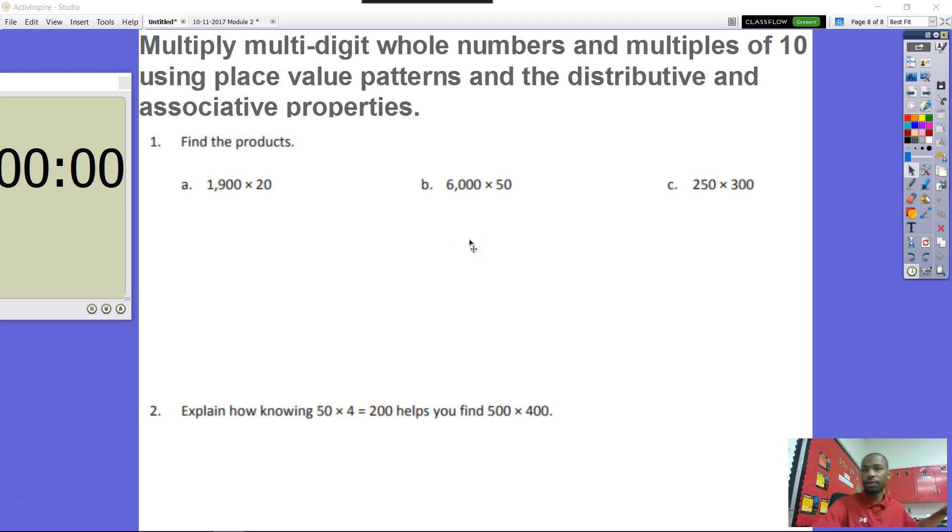All right, so this is a quick review of Lesson 1, Module 2, Lesson 1. The objective was we will be able to multiply multi-digit whole numbers and multiples of 10 using place value patterns and the distributive and associative properties. So let's take a look at this.